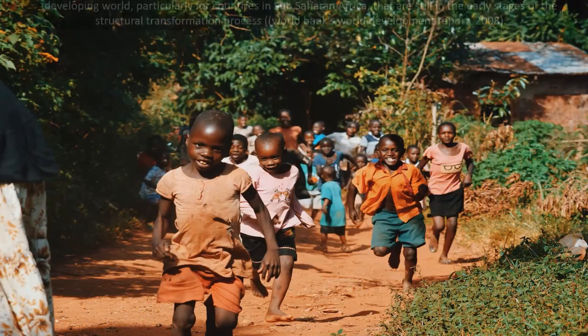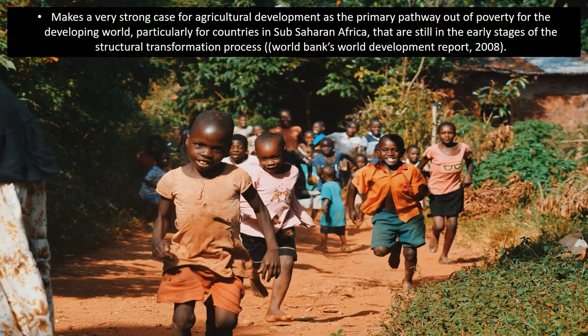The World Bank World Development Report 2008 makes a strong case that agricultural development is the primary pathway out of poverty for the developing world, particularly for countries in sub-Saharan Africa still in early stages of structural transformation. For such societies, agricultural biodiversity management has to be seen as an integral part of the overall strategy for agriculture and economic development. We need to find ways to develop agriculture to improve food security and reduce poverty while also protecting agricultural biodiversity.